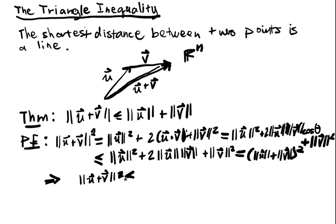And that gives me the inequality norm of u plus v, not squared, now I want to get rid of the square, is less than or equal to norm u plus norm v. And that's it.